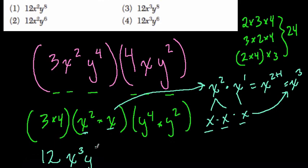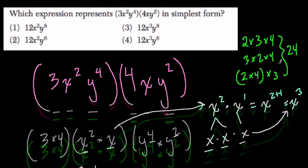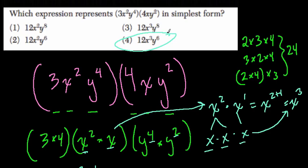Same thing here, y to the sixth, because we add these exponents for the same reason. So here I would pick choice 4: 12x to the third, y to the sixth. Alright, thanks.